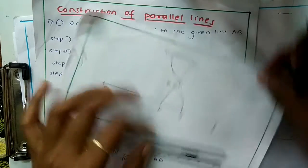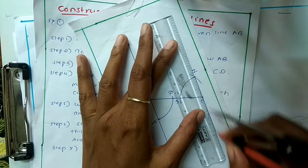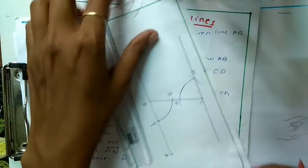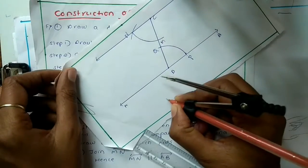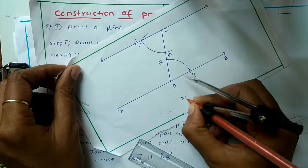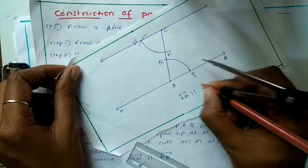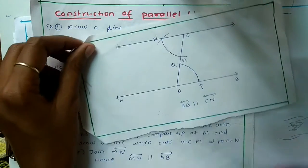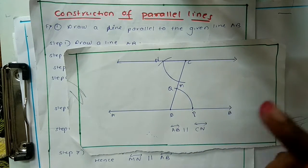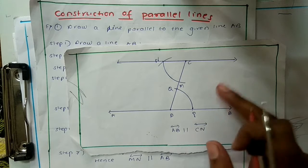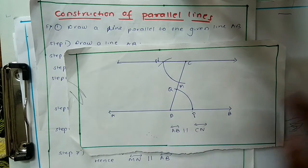You can extend the line however you want once you have the two points. The line CN is parallel to AB — you can write AB is parallel to CN or CN is parallel to AB. For any construction of parallel lines you follow these same steps, and you can also construct a line parallel to AB below AB using the same procedure.